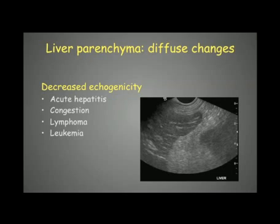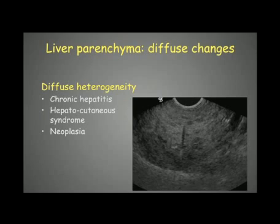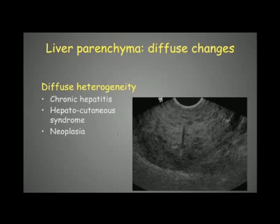As a final diffuse change, we can have diffuse heterogeneity of the liver, which is less common. It can be seen with chronic hepatitis, hepatocutaneous syndrome, and some cases of neoplasia — presenting as multiple hypoechoic areas dispersed throughout the parenchyma. In one example shown, aspiration revealed vacuolar degeneration.